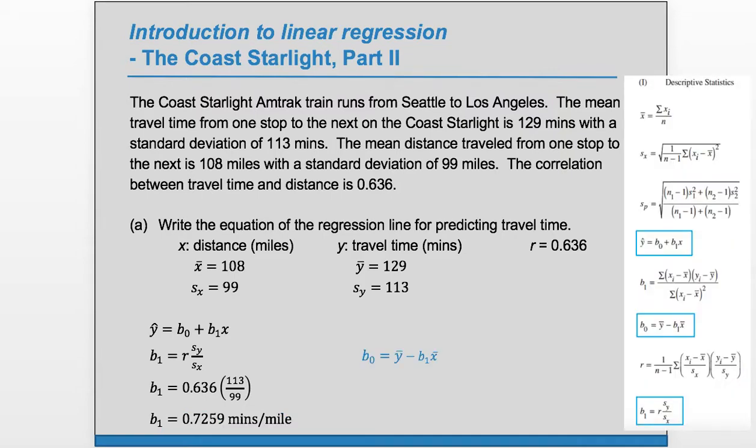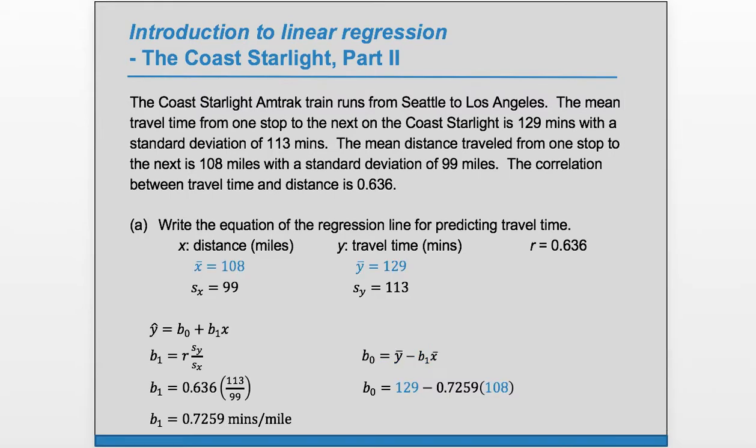And now we need b0. B0 actually requires b1, which is why we calculated it second. So now we have enough information to calculate b0. We'll do y bar of 129 minus the b1 that we just calculated times the 108, which is the x bar. And that'll give us b0 of 50.6 minutes.